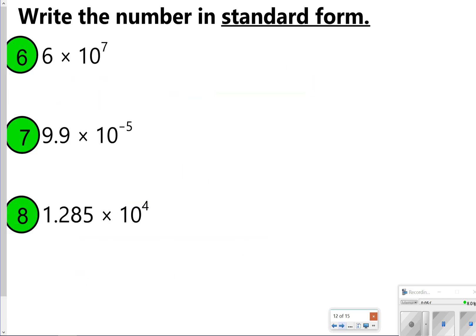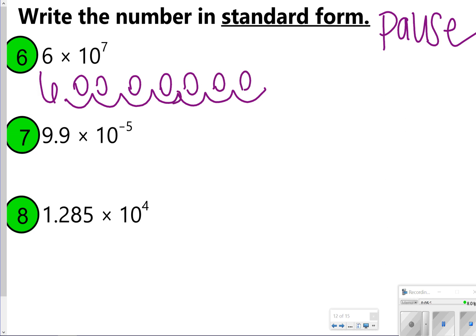Okay. The next few you're going to try. So 6, 7, and 8. Go ahead and pause the video now so you can try them. And then once you're done, click play to check your work. Alright. So for number 6, we're starting with the number 6. The decimal is right behind it, and we're going to move it 7 spaces to the right. 1, 2, 3, 4, 5, 6, 7. This one is going to be a 6 with 7 zeros. Or 60 million.